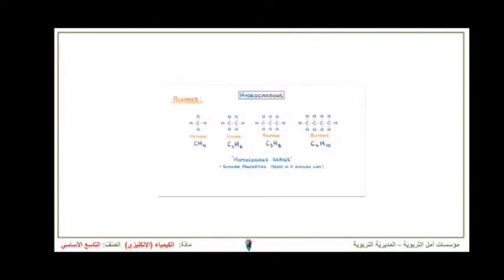It also means that we can write a general formula which describes the entire series, and in the case of alkanes the general formula is CnH2n+2.